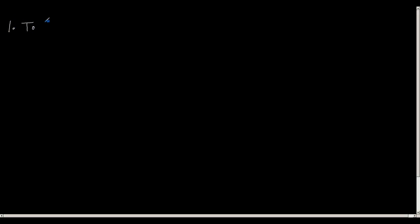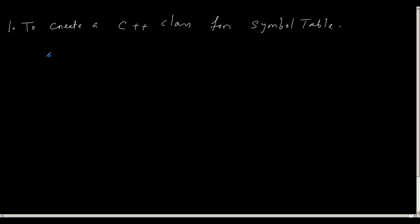I will give you an exercise to create a C++ class for symbol table implementation. You should think about what this symbol table class should look like and what it should contain. For example, it should be able to contain information for various declarations like 'char C'. At a minimum, a symbol table should contain the symbol name and the symbol type.